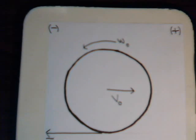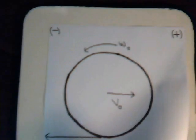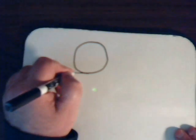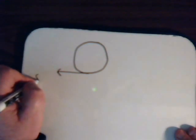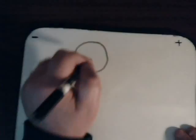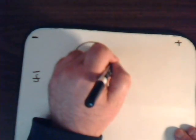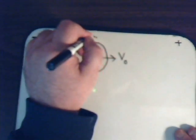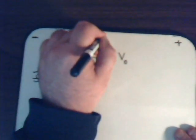For this video, we're going to solve our problem using the kinematics approach. Let's draw a circle to represent our ball. Here we have the frictional force pointing in the negative direction at the center of mass, an initial linear velocity in the forward direction, and an initial angular velocity in the opposite sense.